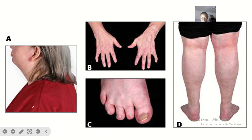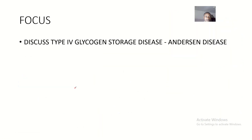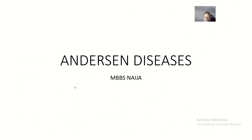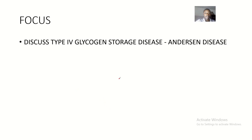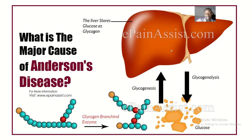We're talking about the inborn errors of metabolism. This tutorial will be focusing on Anderson's disease. We'll be looking at the causes of Anderson's disease and some pictures. Our focus for this lecture is to discuss glycogen storage disease type 4, which is also known as Anderson's disease.